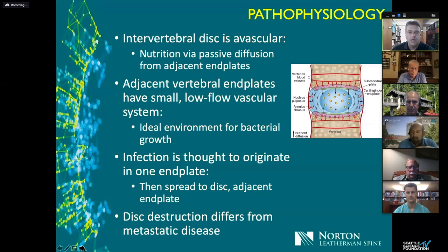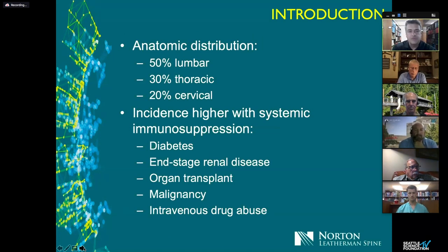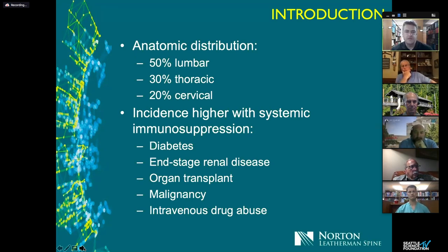For the fellows: when you have a consult that looks like this, metastatic disease will often be in the differential. But typically with osteomyelitis you'll see destruction of the disc, whereas with metastases you'll see preservation of the disc — that's an important key distinction. In terms of anatomic distribution, about 50 percent of cases occur in the lumbar spine, 20 to 30 percent in the thoracic spine, and about 20 percent in the cervical spine.